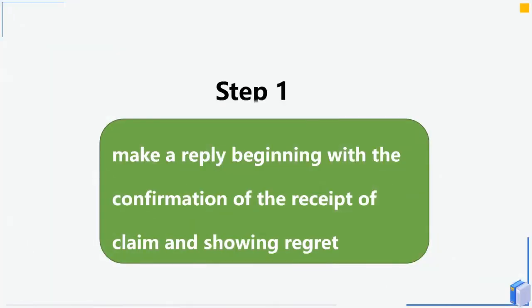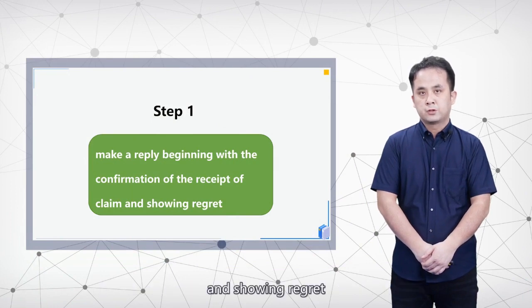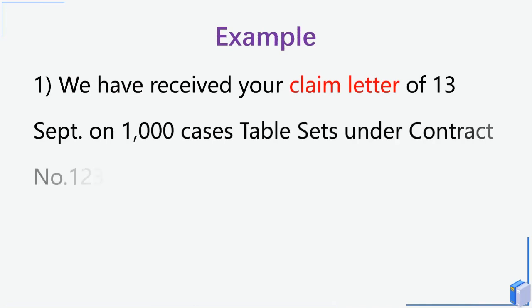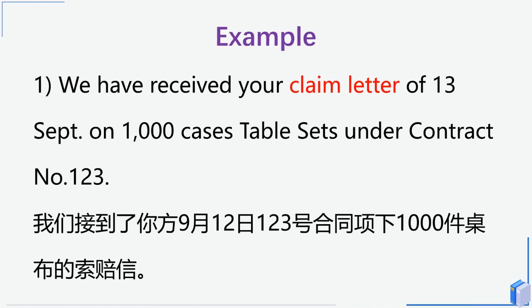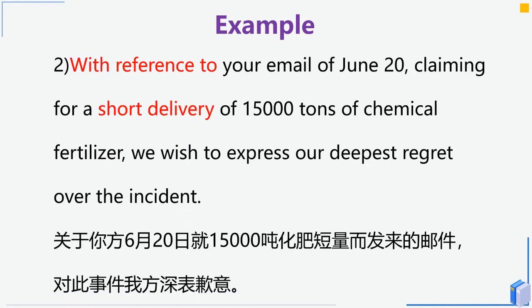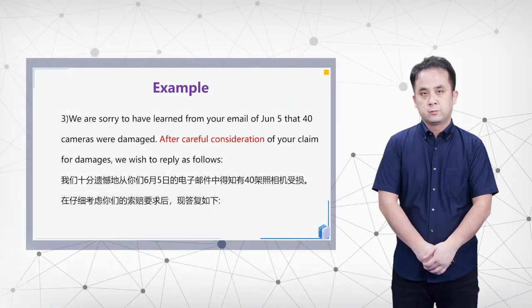Upon receiving the customer's claim, the seller would make a reply beginning with confirmation of receipt of the claim and showing regrets. For example: 'We have received your claim letter of 13 September on 1,000 cases of table sets under contract number 123.' Or: 'With reference to your email of June 20 claiming for short delivery of 15,000 tons of chemical fertilizer, we wish to express our deepest regret for the incident.' Or: 'We are so sorry to have learned from your email of June 5 that 40 cameras were damaged. After careful consideration of your claim for damage, we wish to reply as follows.'